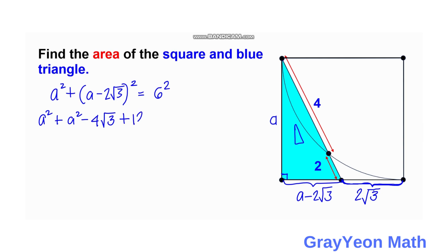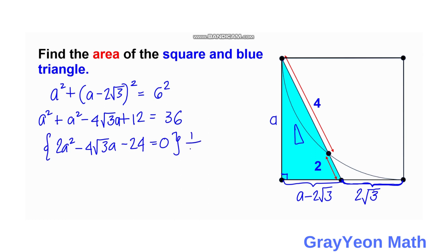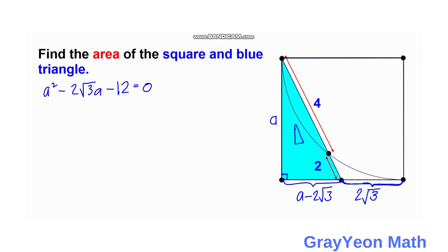Expanding: a² + a² − 4√3·a + 12 = 36, which gives 2a² − 4√3·a + 12 − 36 = 0, so 2a² − 4√3·a − 24 = 0. Multiplying through by one-half because all coefficients are divisible by 2, we get a² − 2√3·a − 12 = 0.